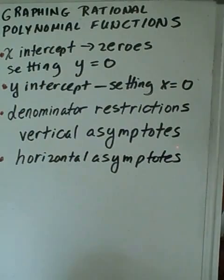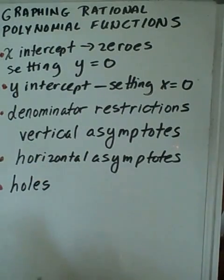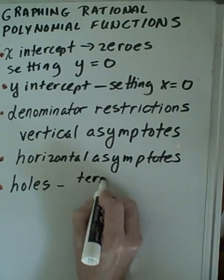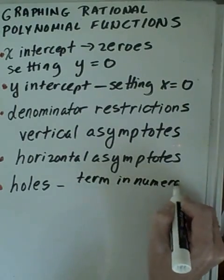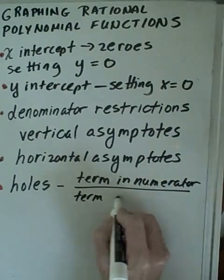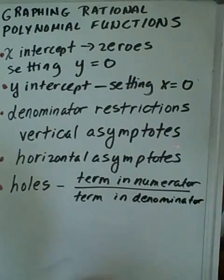And a fifth thing is to see if there are any what's called holes. Holes occur when a term in the numerator cancels with a term in the denominator. Now this is a lot of information, so we're going to take this one step at a time. So let's first talk about holes.